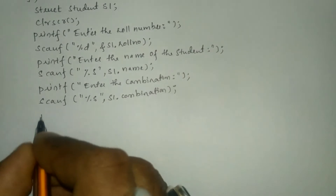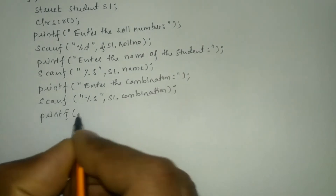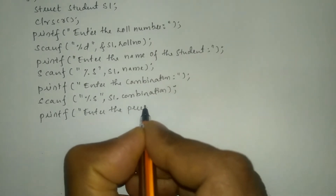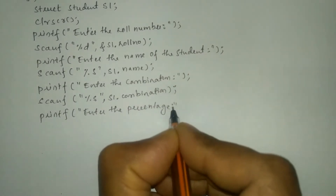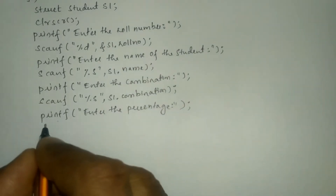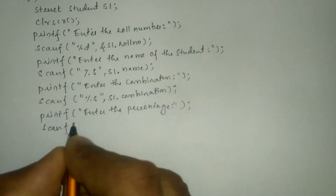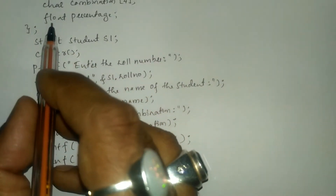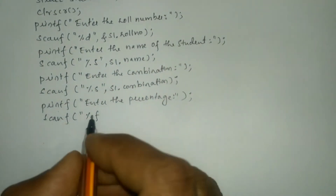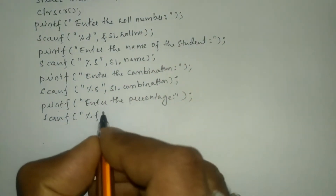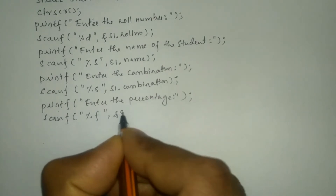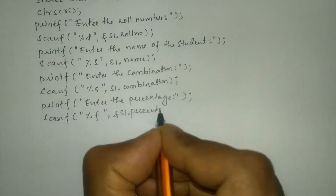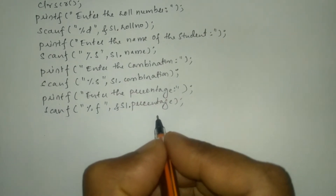Now we are going to ask the user to enter the percentage using a printf statement, writing enter the percentage, end double quotation mark and put semicolon. Let us use scanf statement; here I'm going to write the format specifier %f because percentage is of type float. End the double quotation mark, put comma, ampersand s1 dot percentage, closing bracket and put semicolon.